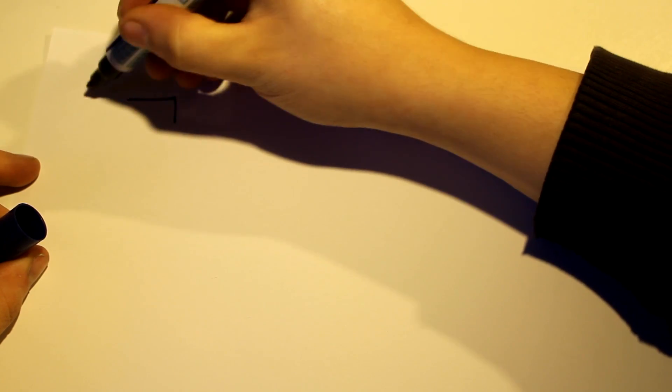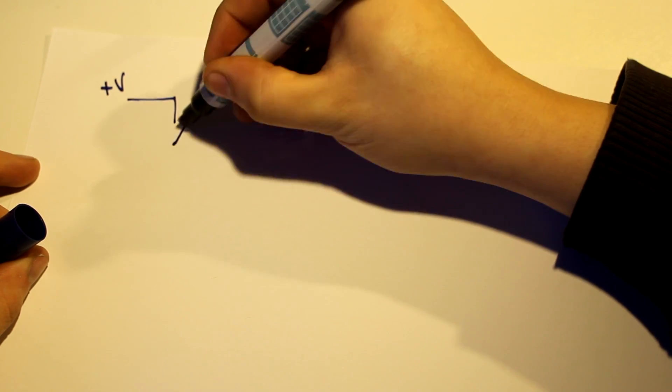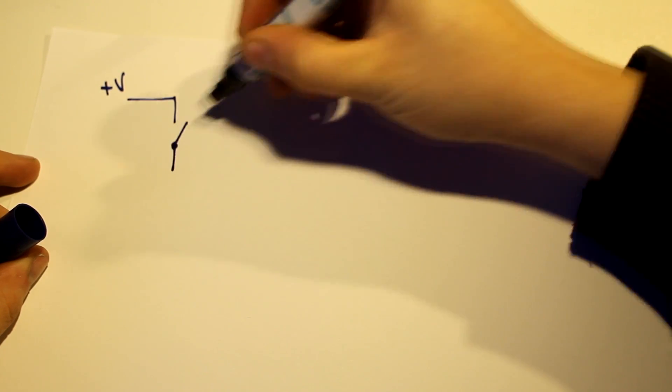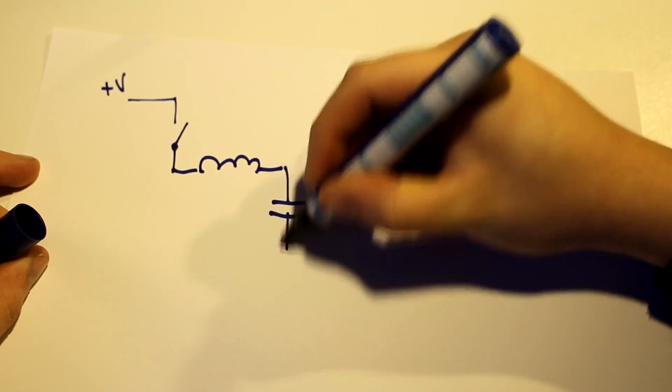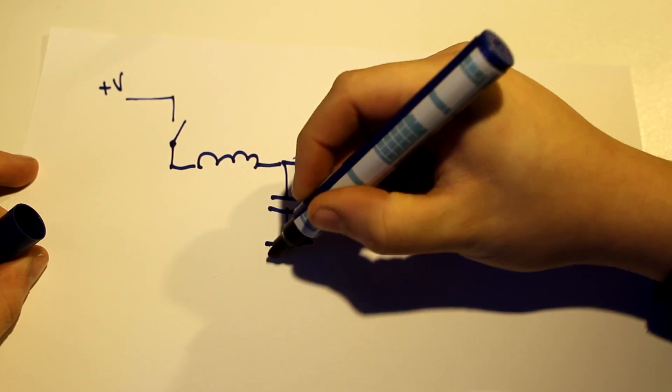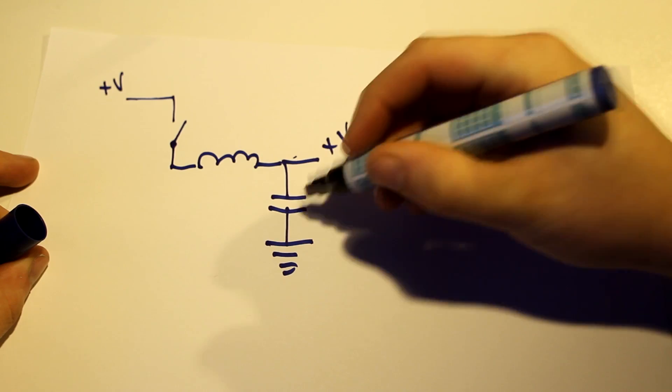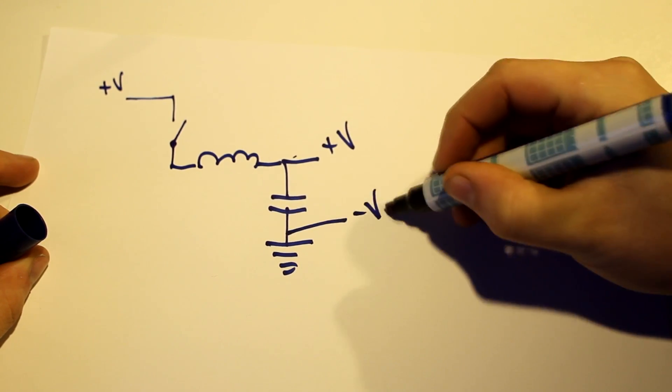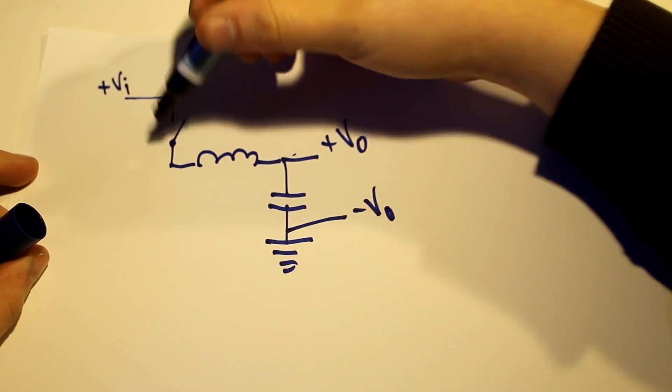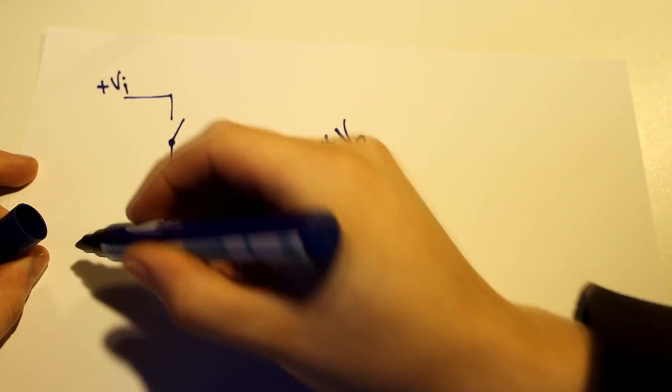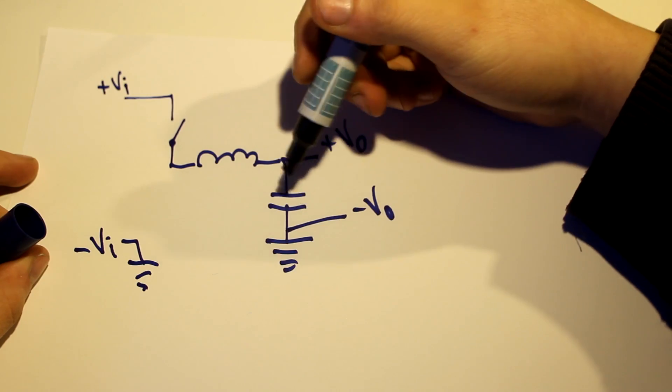It is an incoming line with some kind of positive voltage, a switch, an inductor, and some outgoing positive voltage, and the outgoing negative voltage. Let's call this VO for output voltage and this VI for input voltage. There is also a negative VI, but that's also grounded. These are essentially tied together.